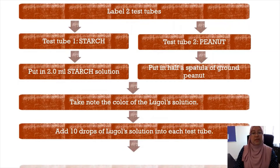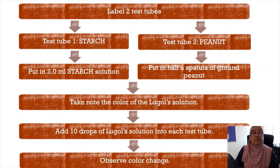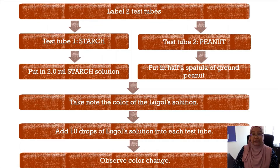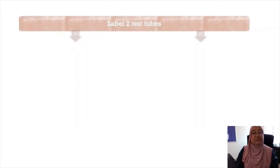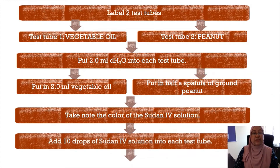This procedure is carried out to determine the presence of polysaccharide. Label two test tubes: test tube one for starch, test tube two for peanut. In test tube one, put in 2 ml of starch solution. In test tube two, put in half a spatula of ground peanut. Take note of the color of the Lugol's solution, then add 10 drops of Lugol's solution into each test tube and observe any color changes.